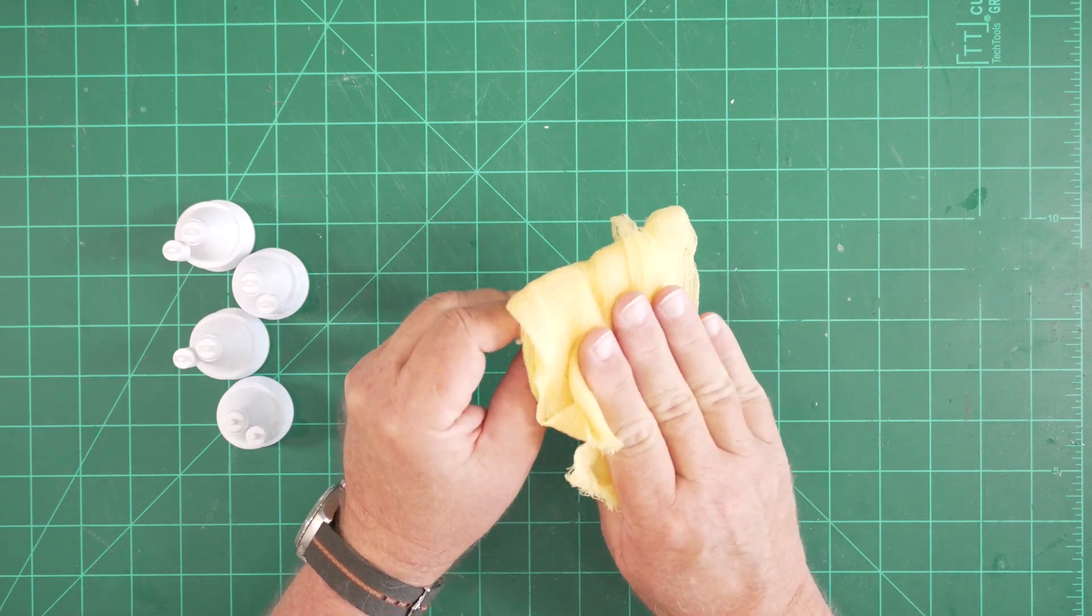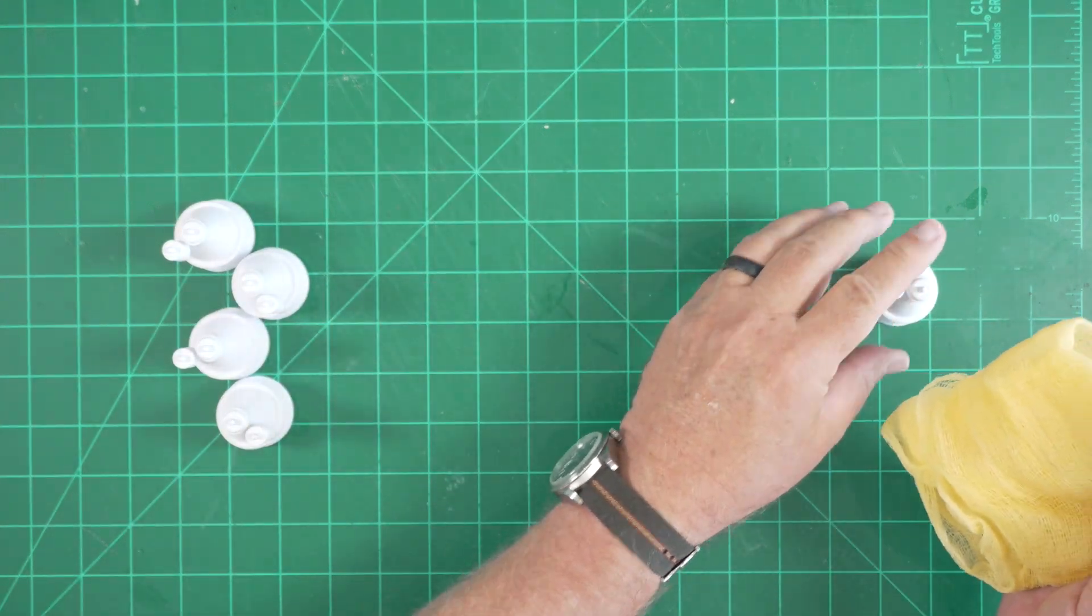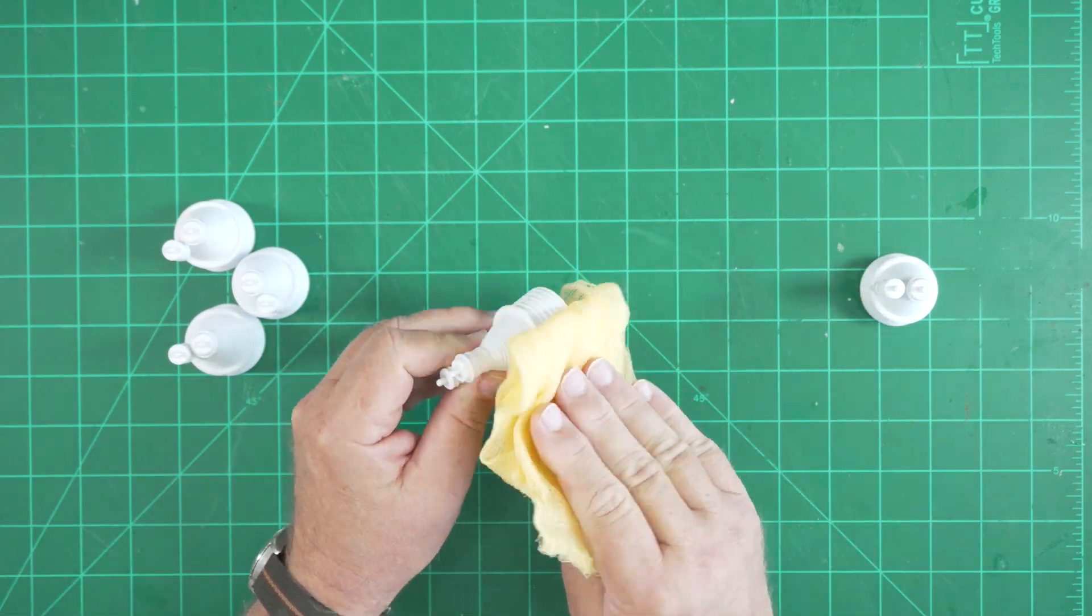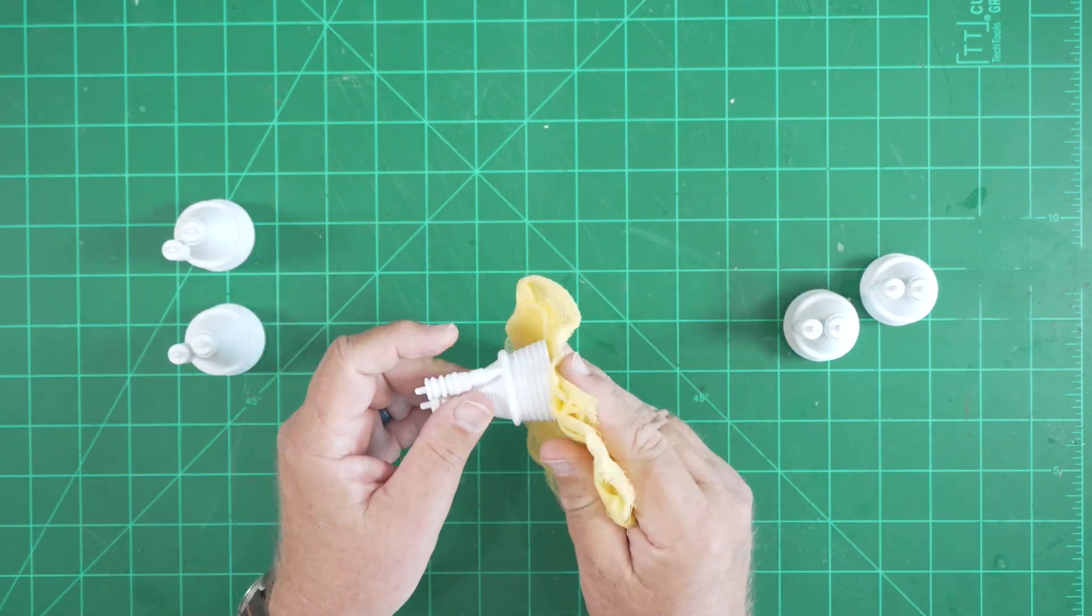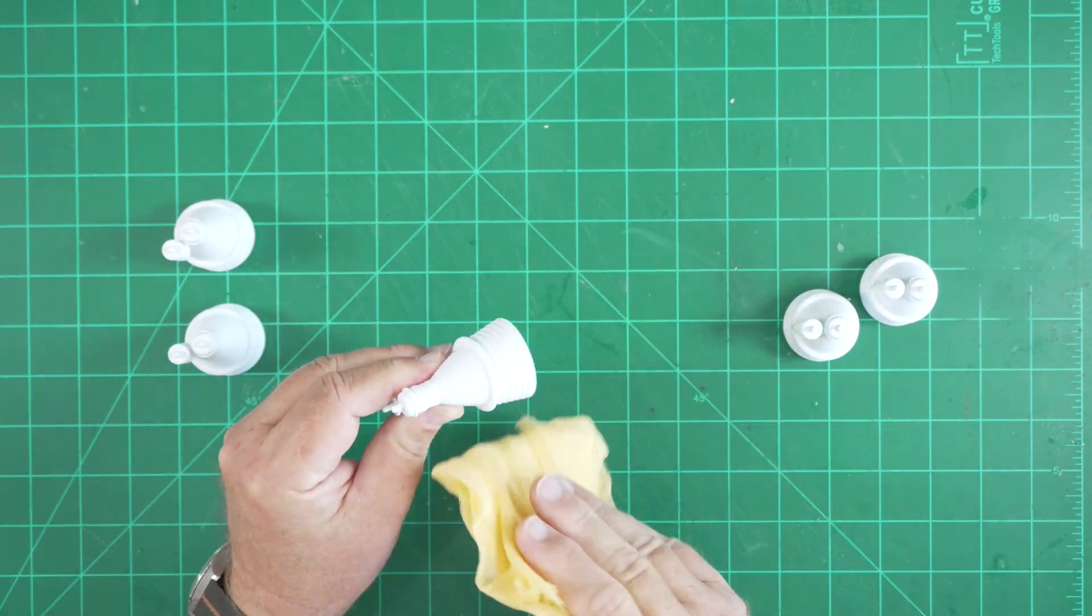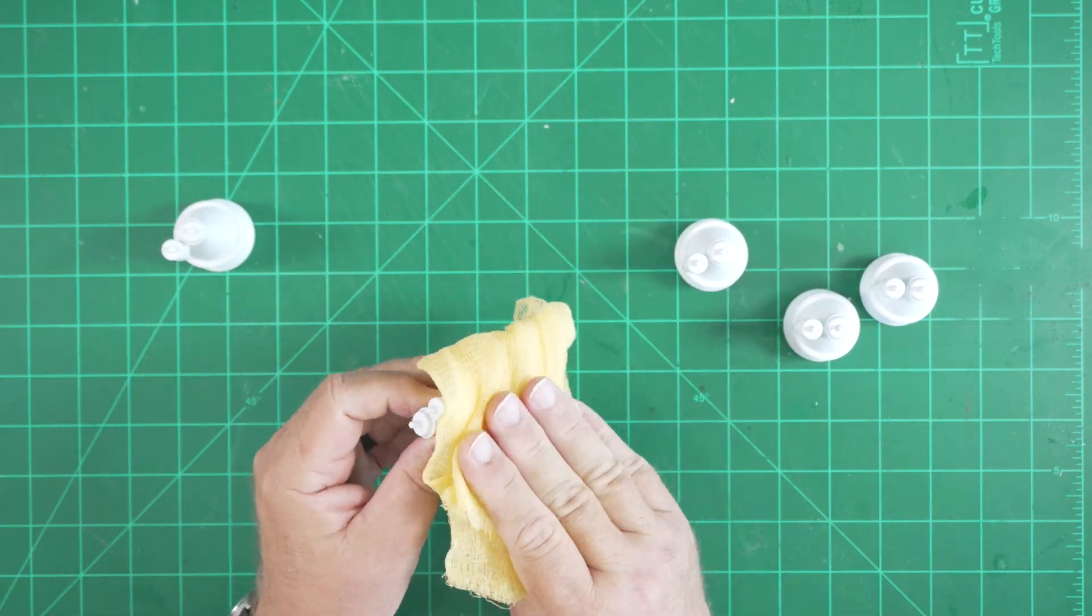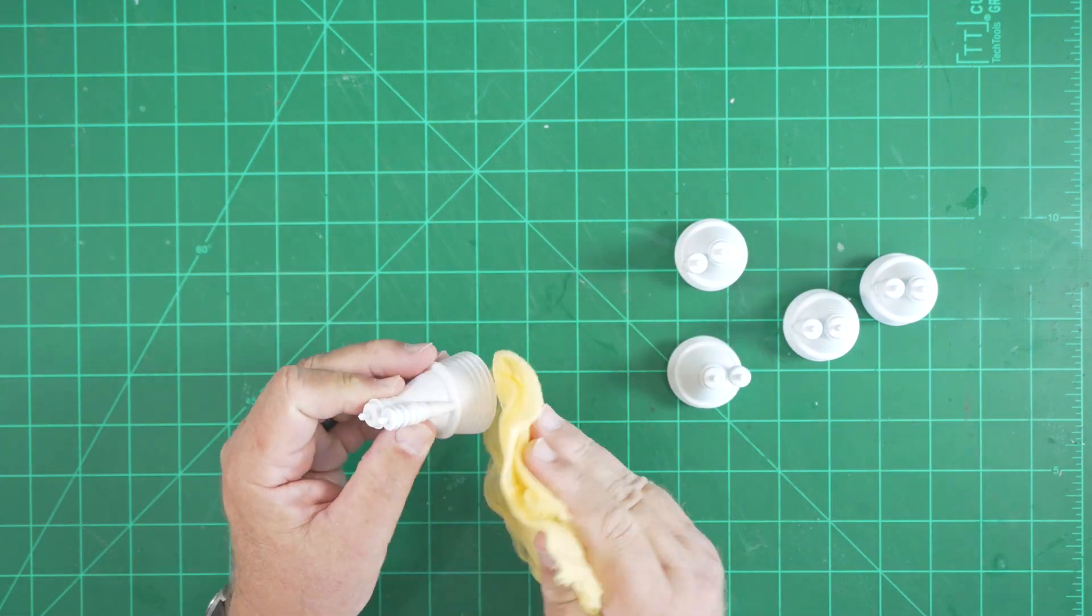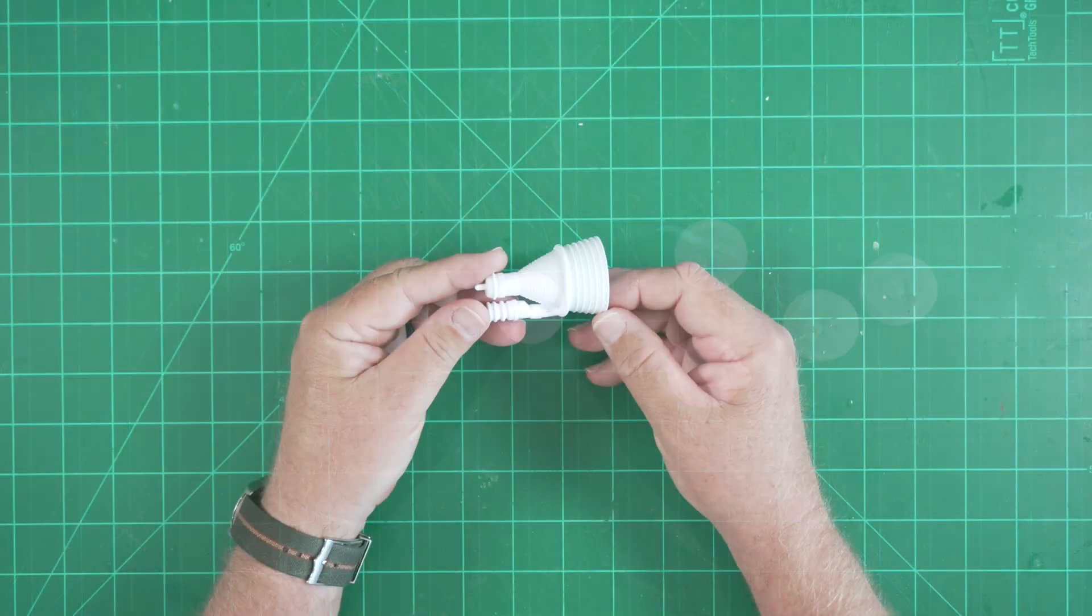With the sanding complete we can now go over the parts with a tack cloth. A tack cloth is just some cheap cheese cloth. It's been impregnated with a mild adhesive, probably wax based, and it will get rid of any stray sanding dust. You can get these at Home Depot or Lowe's or any hardware store in the paint section very inexpensively.